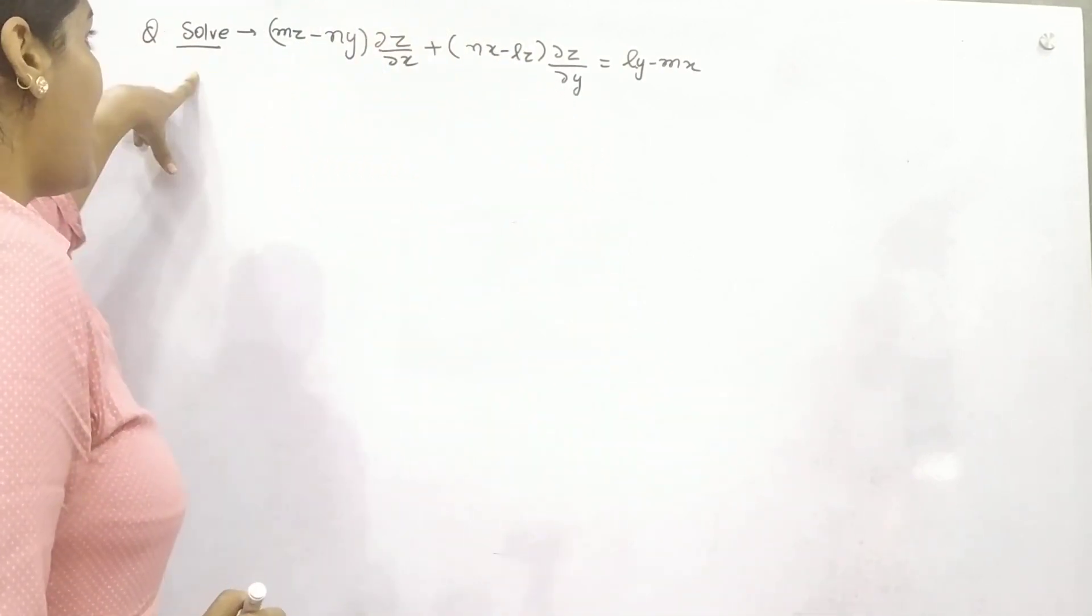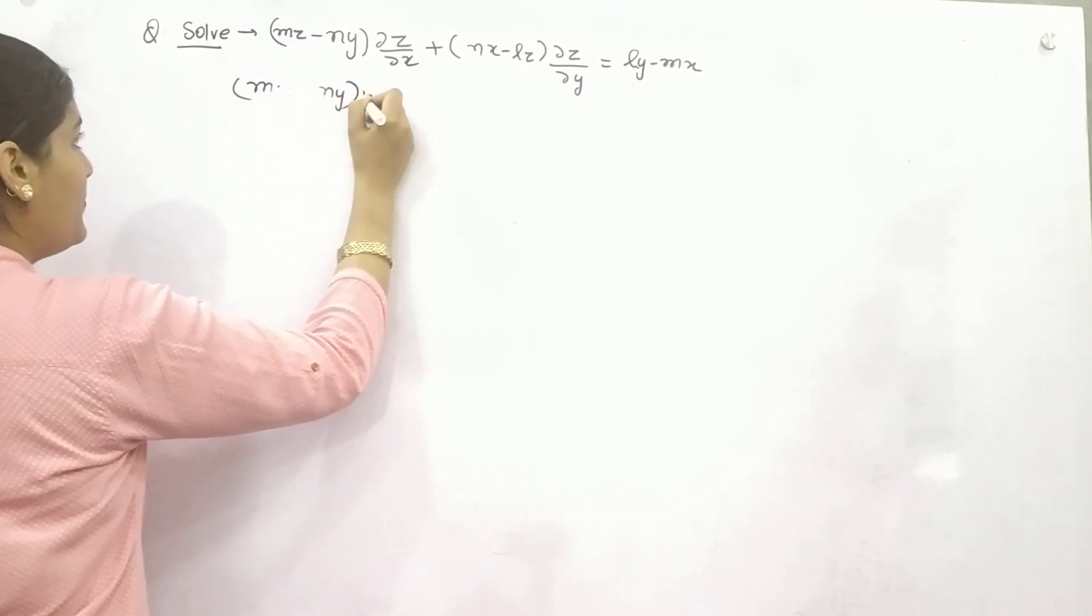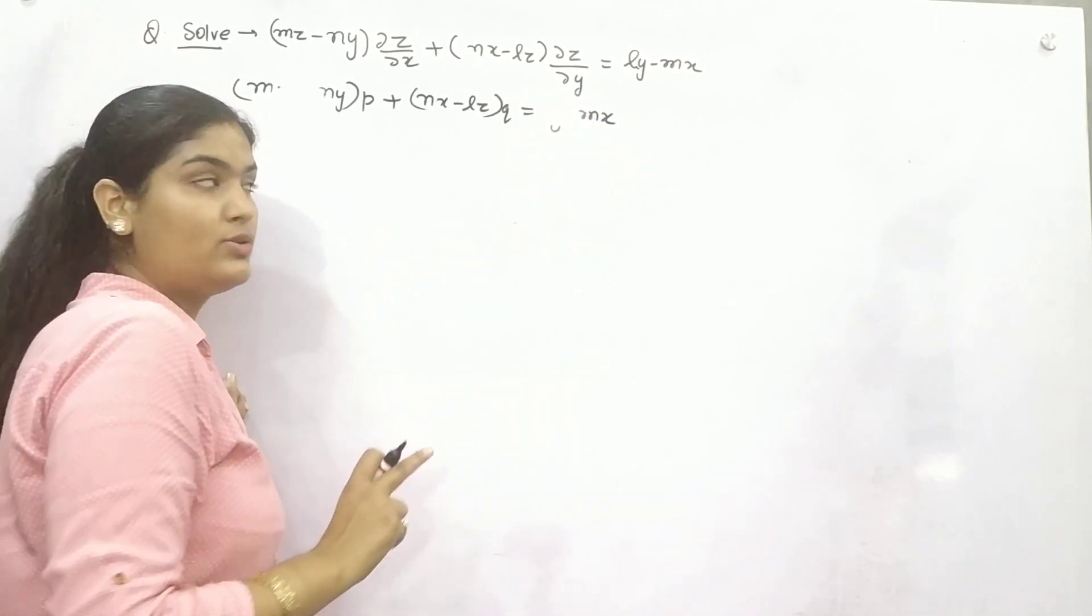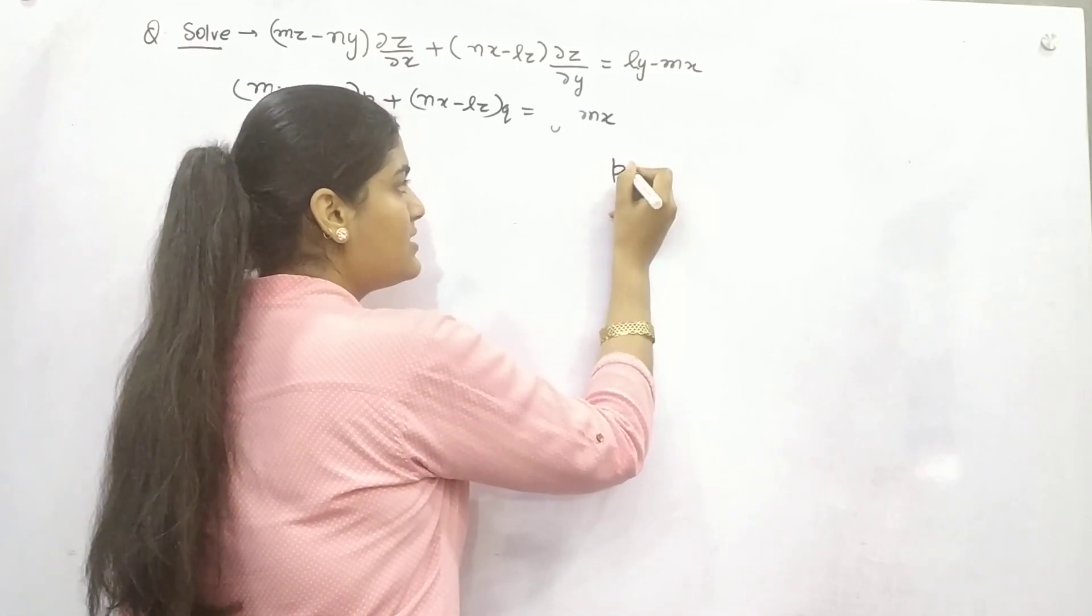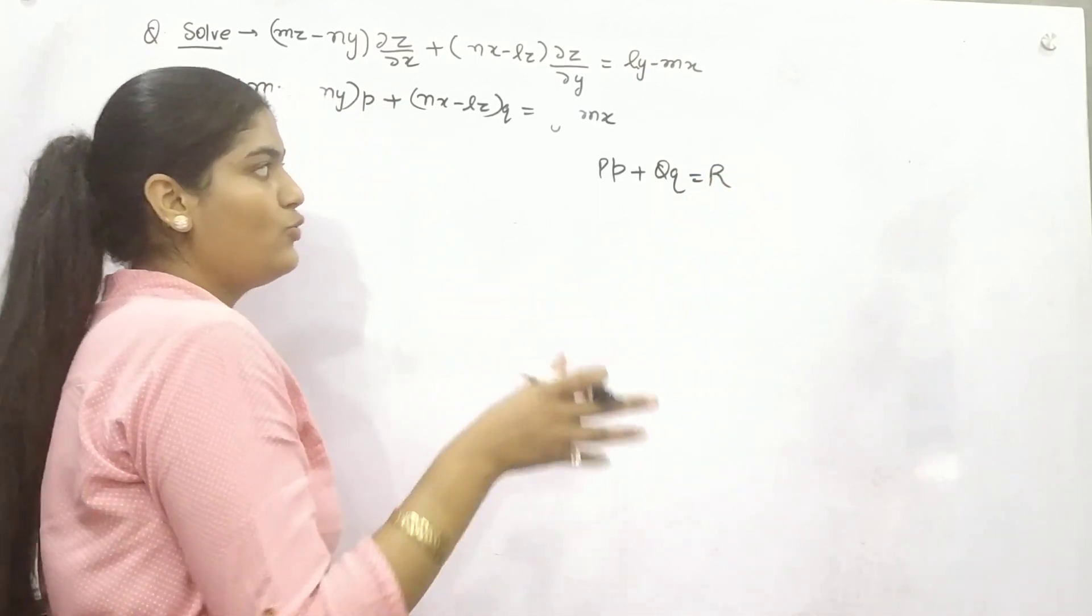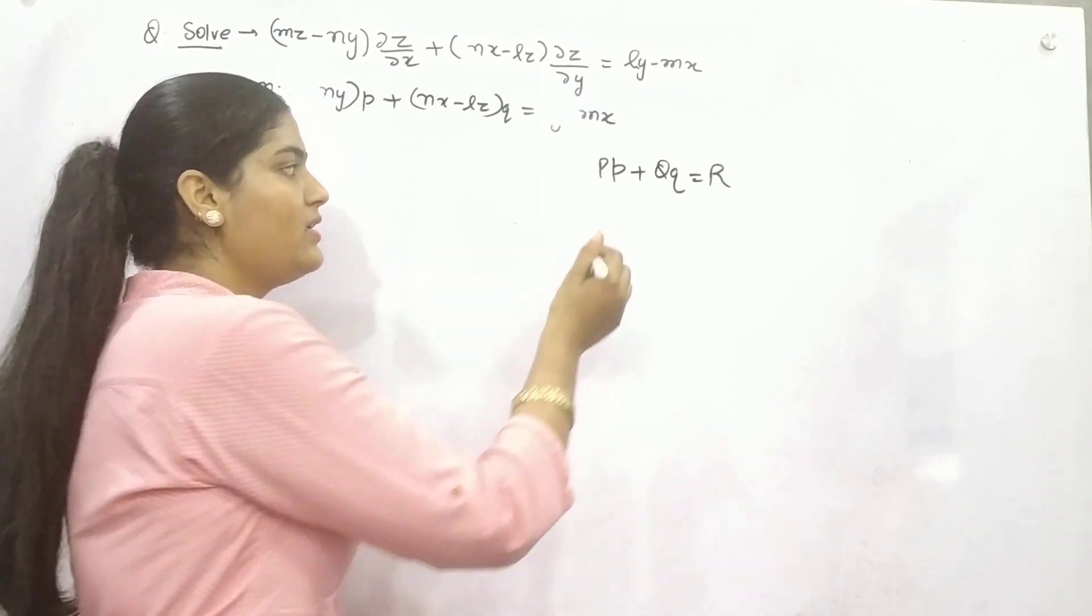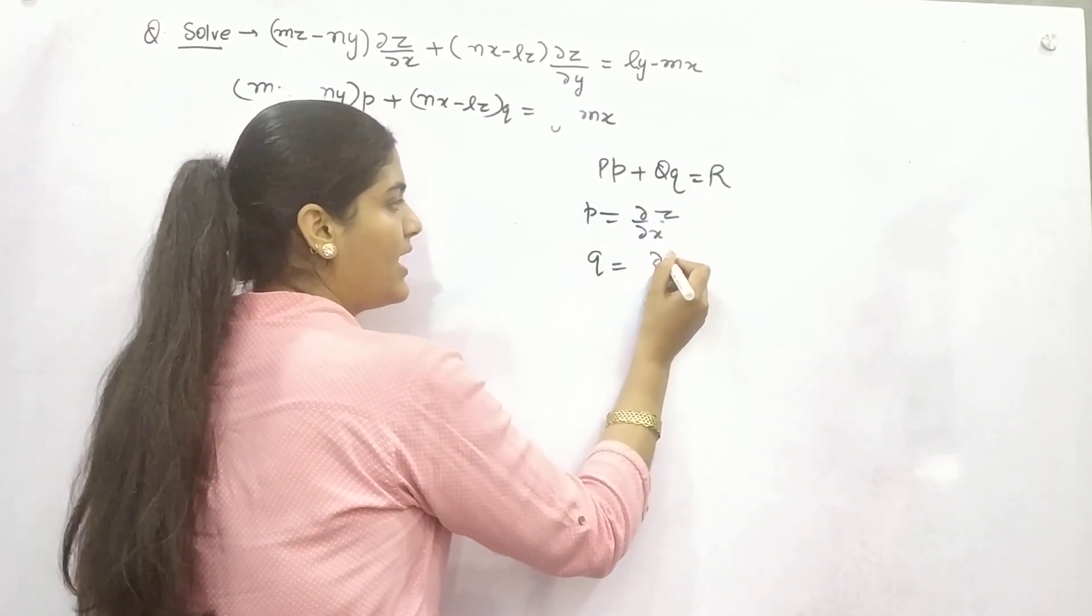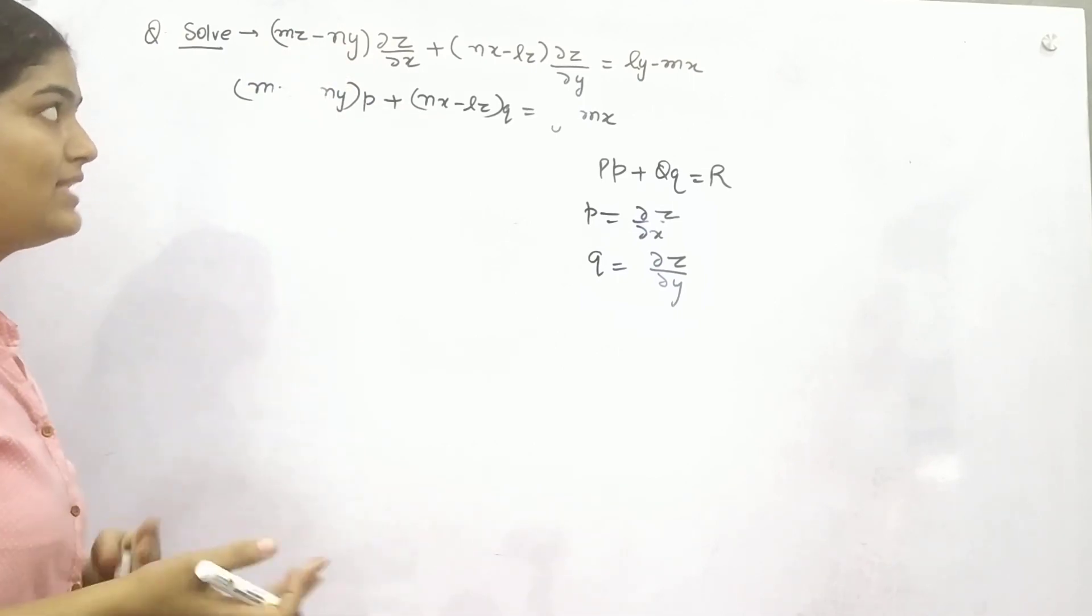You can see it's now in the form of partial differentiation. You can write it like (MZ - NY)P + (NX - LZ)Q = (LY - MX). Make sure you have watched my last video so you'll understand the concept fully. Let me recap: if the equation is in the form P, Q, R, where P, Q, and R are coefficients or constant terms or having variables, P and Q are the partial differentiation operators with respect to X and Y respectively. So I have written P and Q instead of dz/dx or del z/del y.